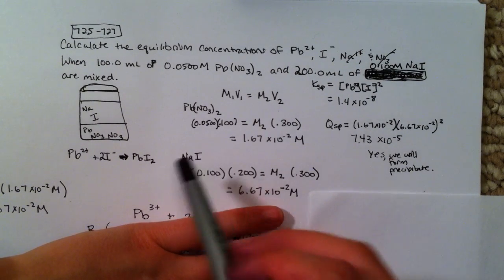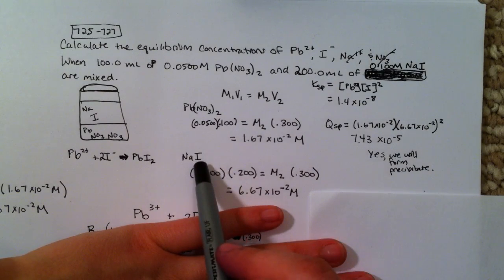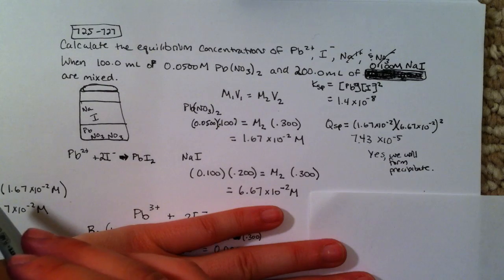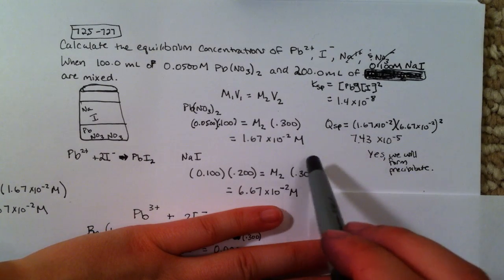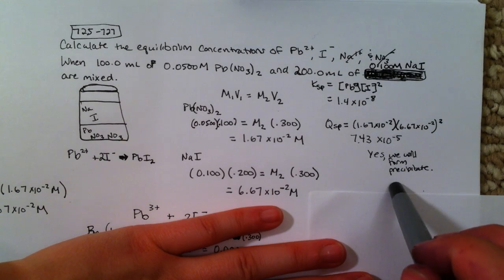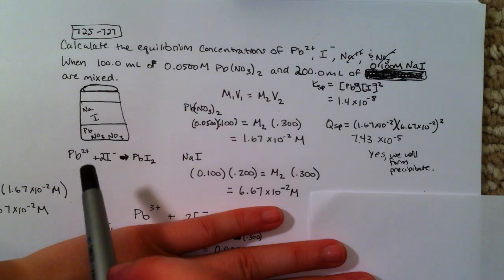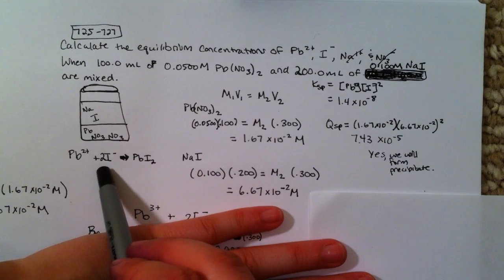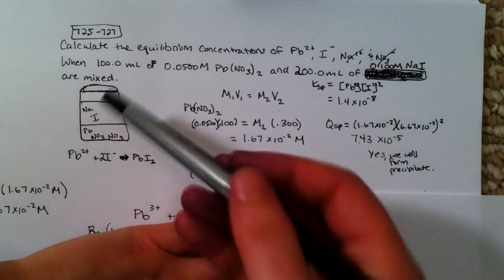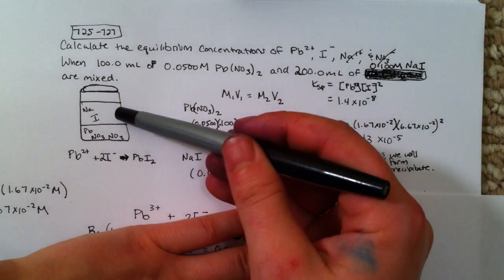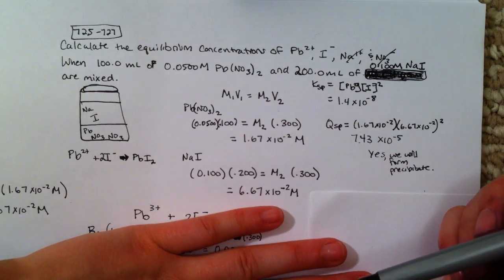Just to review so far, we drew our picture, we diluted, we found the sodium and the nitrate which are the spectator ions, and we figured out will there be some precipitate forming and yes, there will. From here, what I'm actually going to do is pretend like all of the ions react to form precipitate and then only a couple of them dissolve back in the water. It's going to make solving this problem much easier.